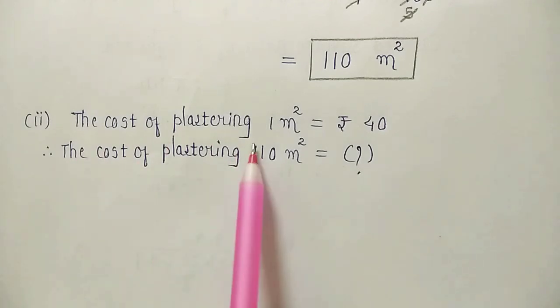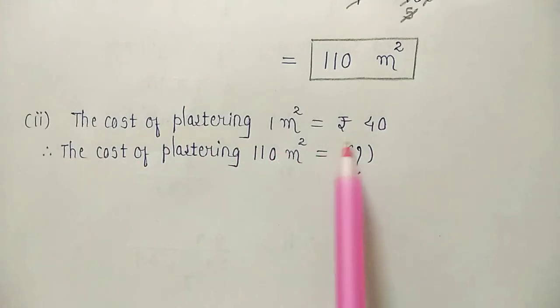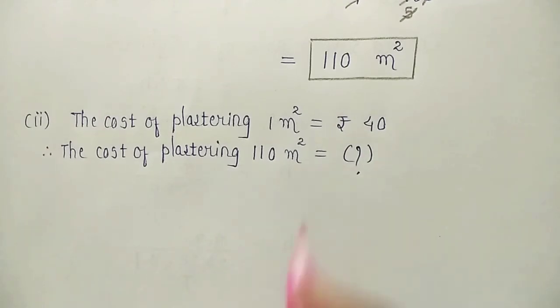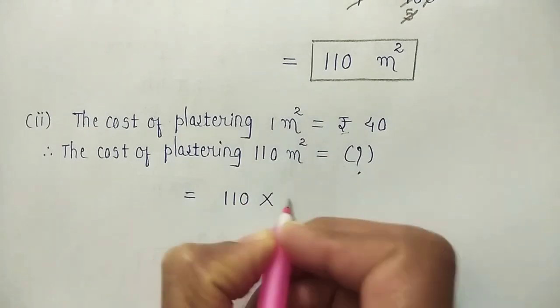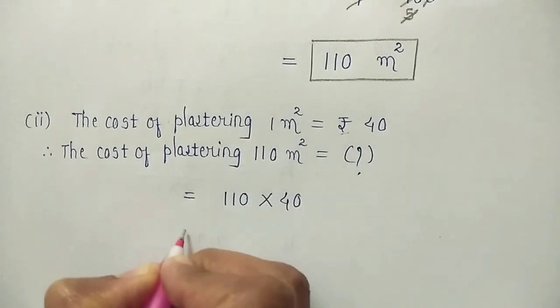we will write the cost of plastering 110 meter square is how much? What to do? Multiplication of this denominator. So, we will write 110 multiplied with 40.